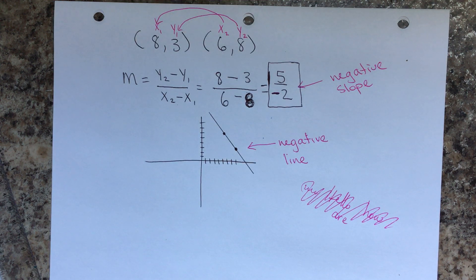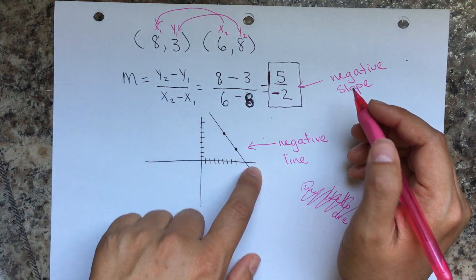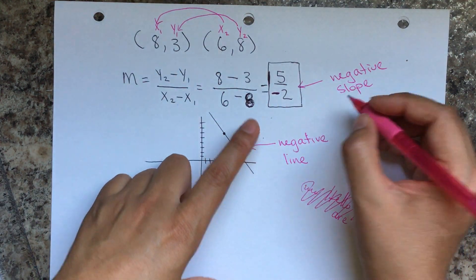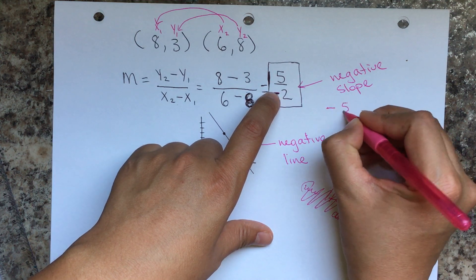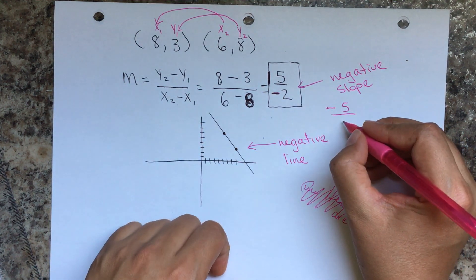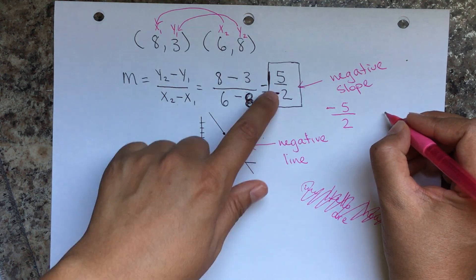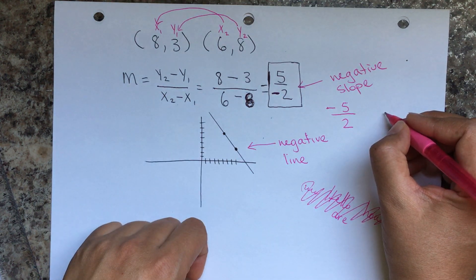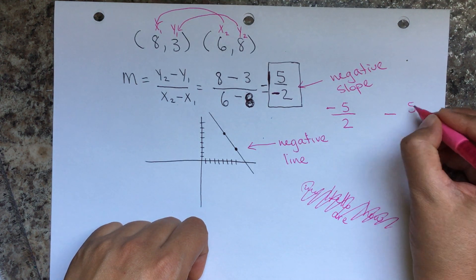Keep in mind that if the result is negative, the negative sign can be placed with the numerator, the denominator, or in front of the fraction — all three representations are equivalent and acceptable.